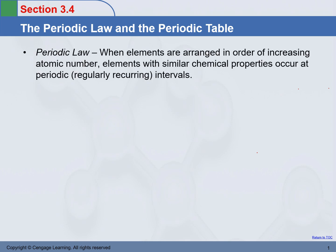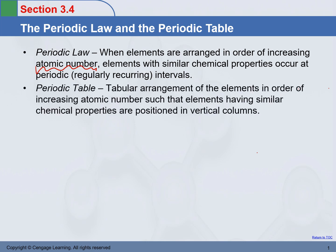Periodic Law says that when elements are arranged in order of increasing atomic number — atomic number is the number of protons — elements with similar chemical properties occur at periodic intervals. This Periodic Law eventually led to the discovery of the Periodic Table.